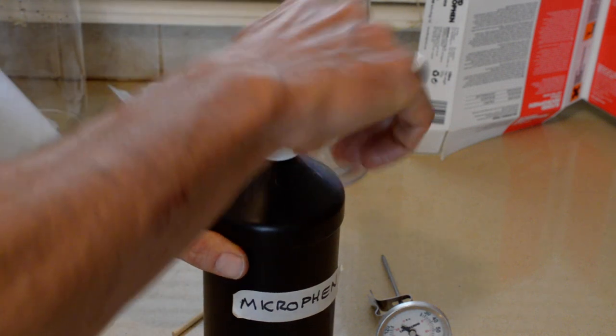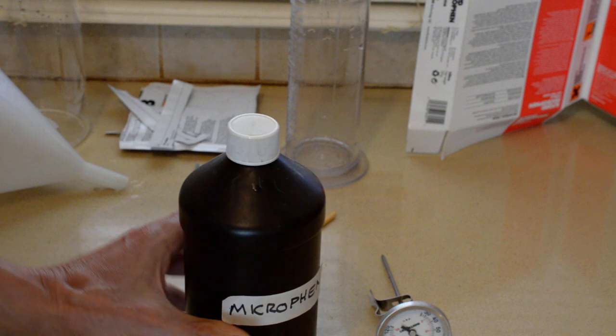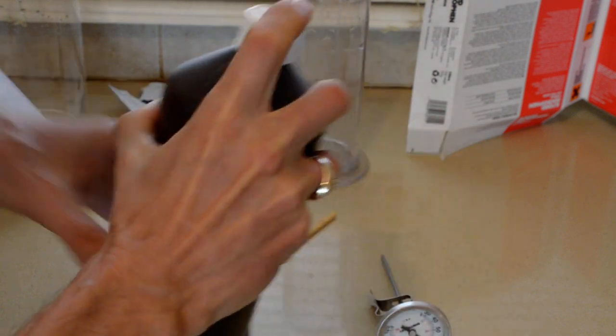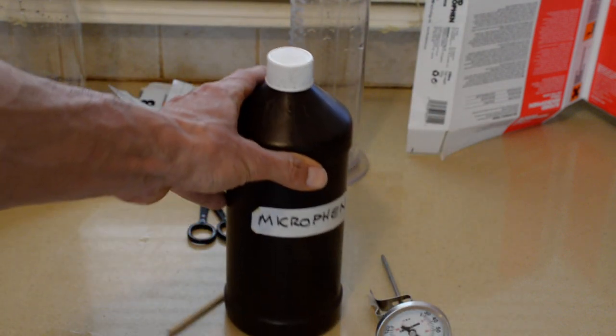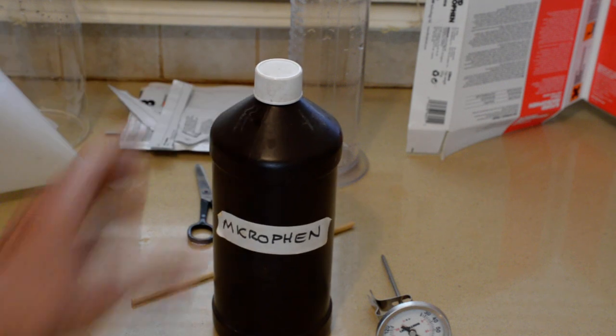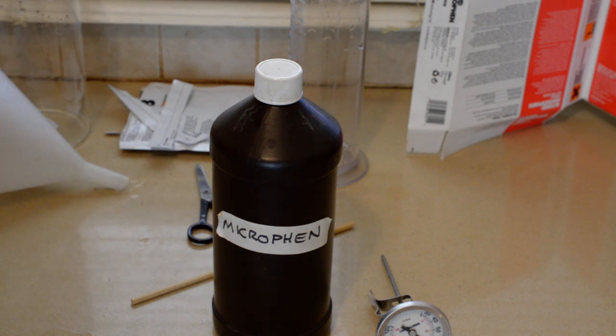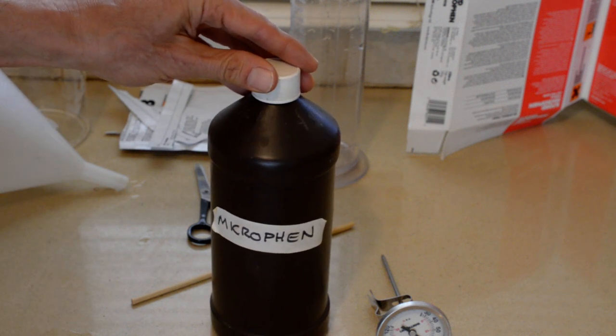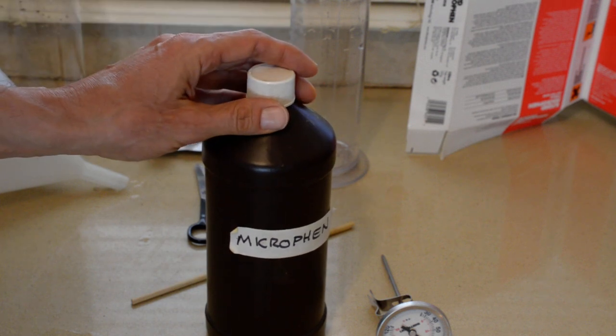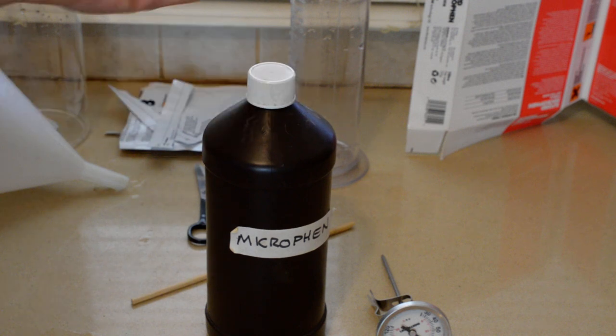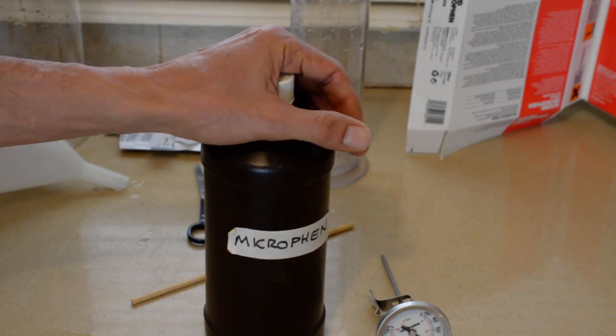And, there you have it. I now have one liter of stock solution of powder developer. In this case, Microfin. And, that is it folks. That's all there is to it. If you can make coffee, you can make powder developer. It's really not that complicated. That's today's episode. I hope you learned something. Hope this was helpful. If you have any helpful hints or tips or opinions or questions, leave a note. Comment. Whatever. Take care. Bye-bye.